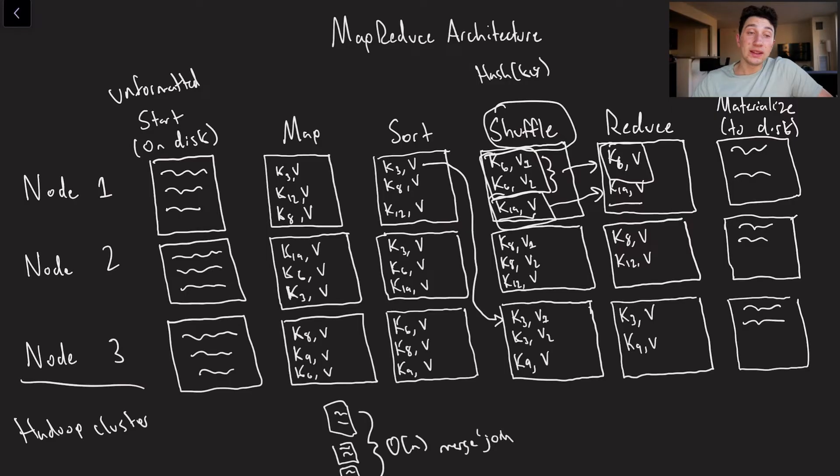And then finally, the entire point of MapReduce is to get data that we can store back in HDFS. And so as a result, the last step is materializing. And this is going to be in disk, and then go back to HDFS, get replicated, all that good stuff.